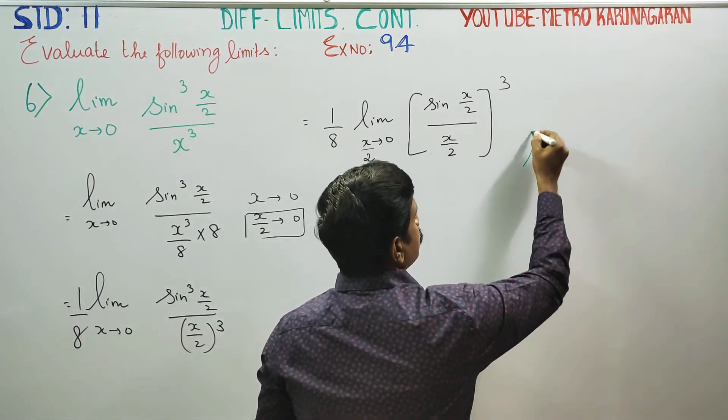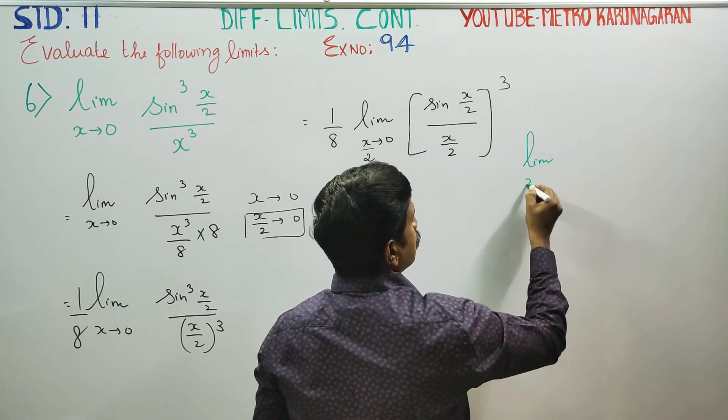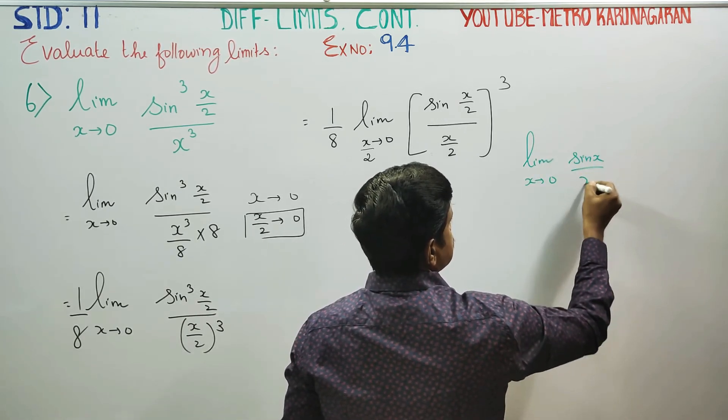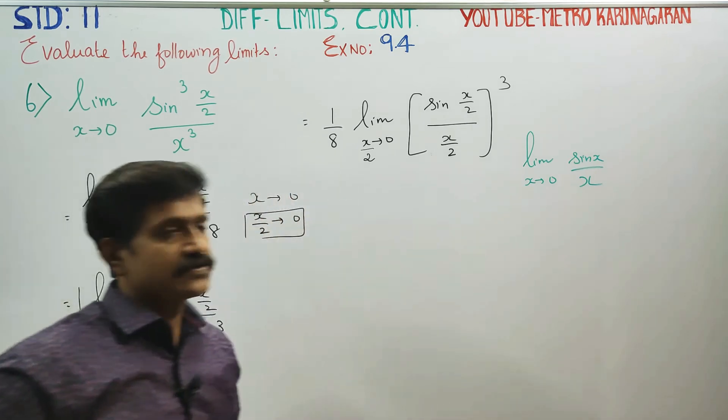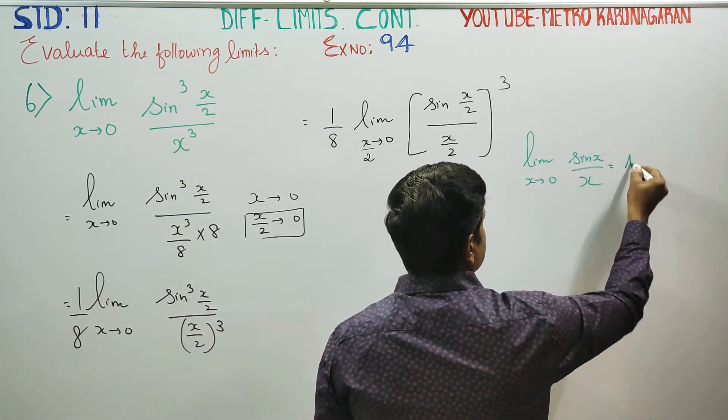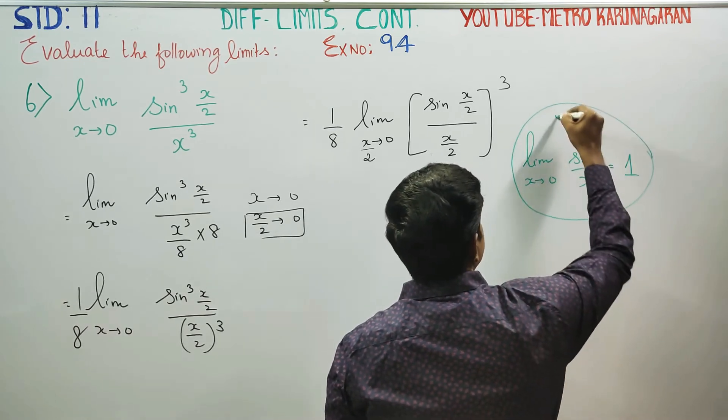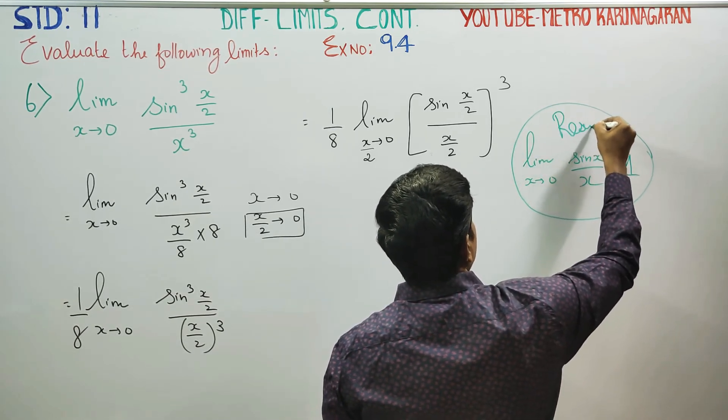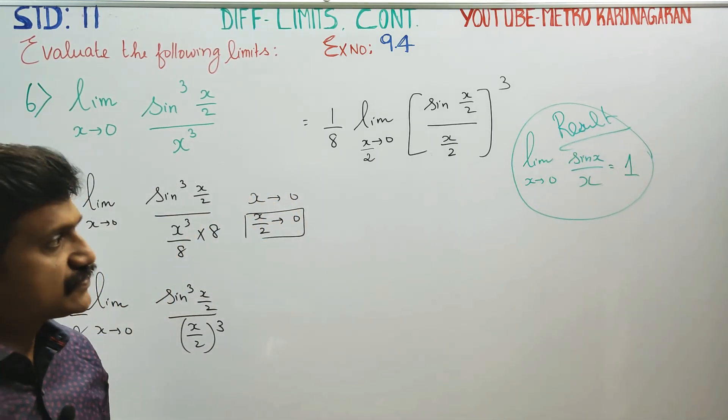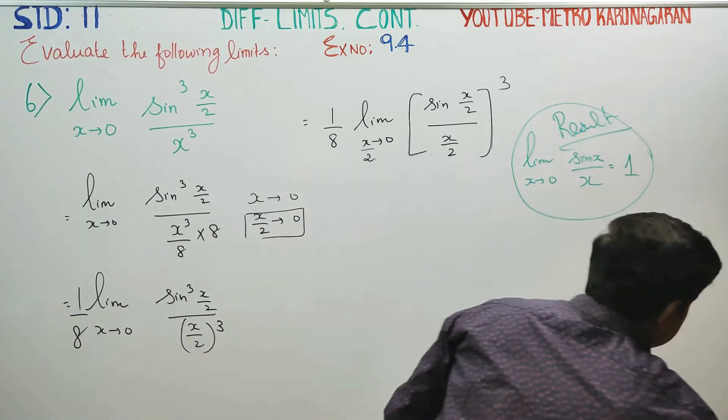So this is why: limit x turns to 0, sin(x)/x. Limit x turns to 0, sin(x)/x is equal to 1. So this is why we have a ready-made result. I am going to use this result. Limit x turns to 0, sin(x)/x is equal to 1.